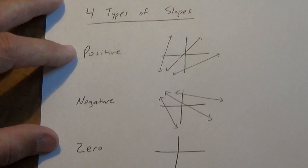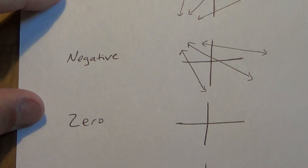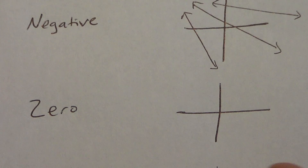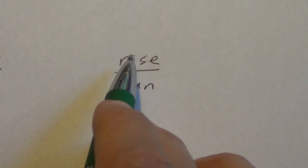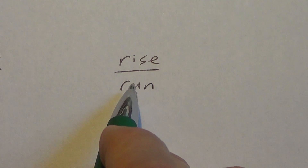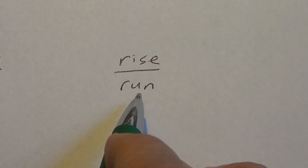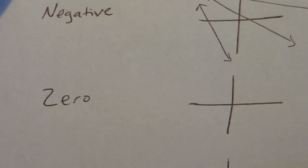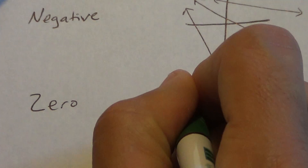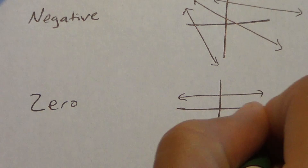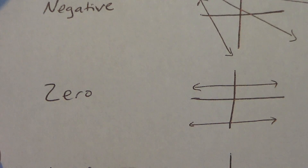The next two types are a little different. A zero slope — if you think about rise over run, the only way a fraction equals zero is if the numerator equals zero. Zero divided by any number gives us zero, so there's no rise at all but we do have a run. A zero slope looks like a horizontal line.